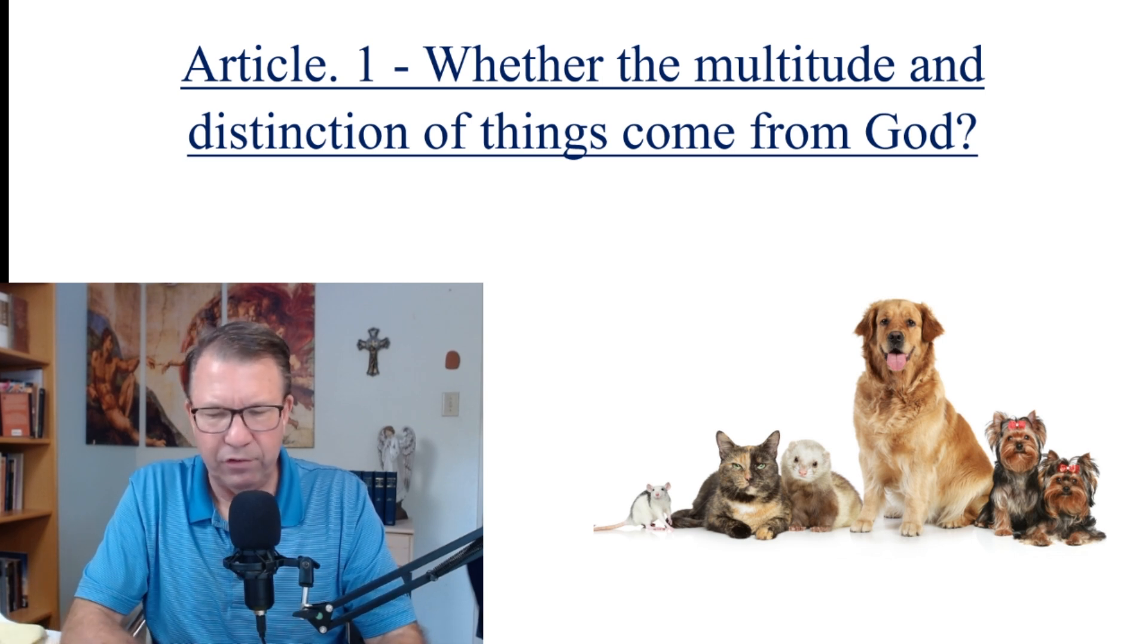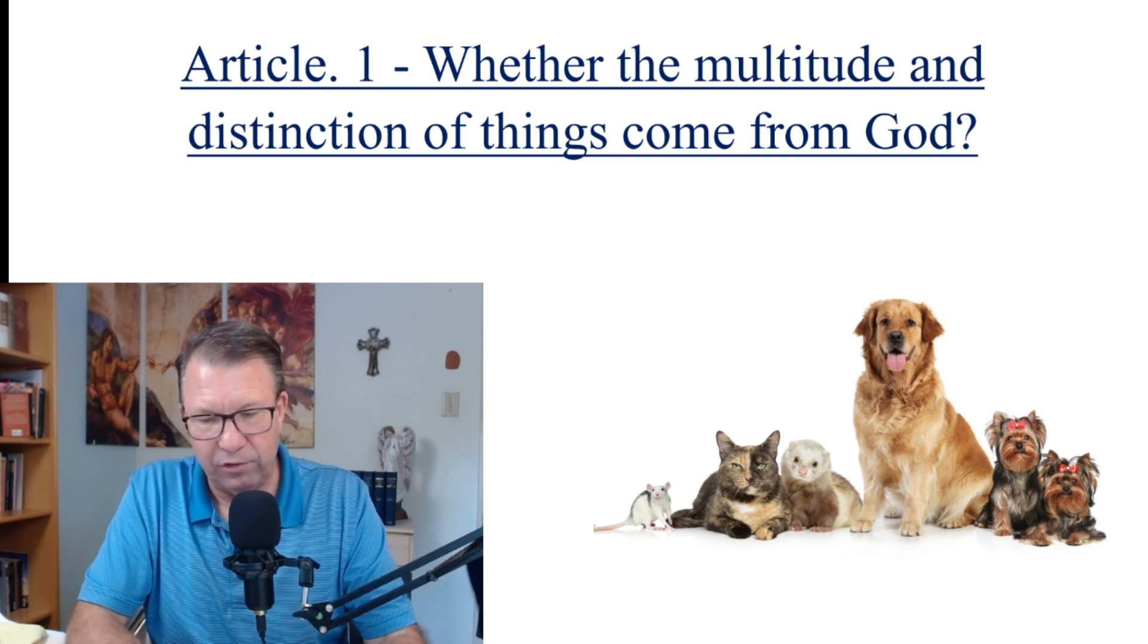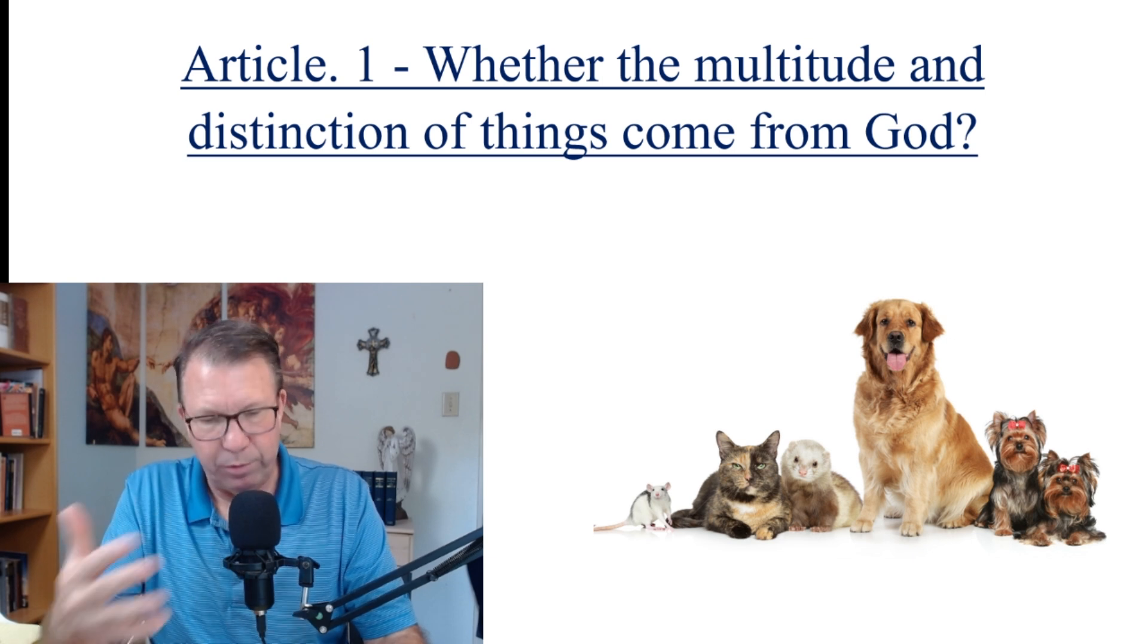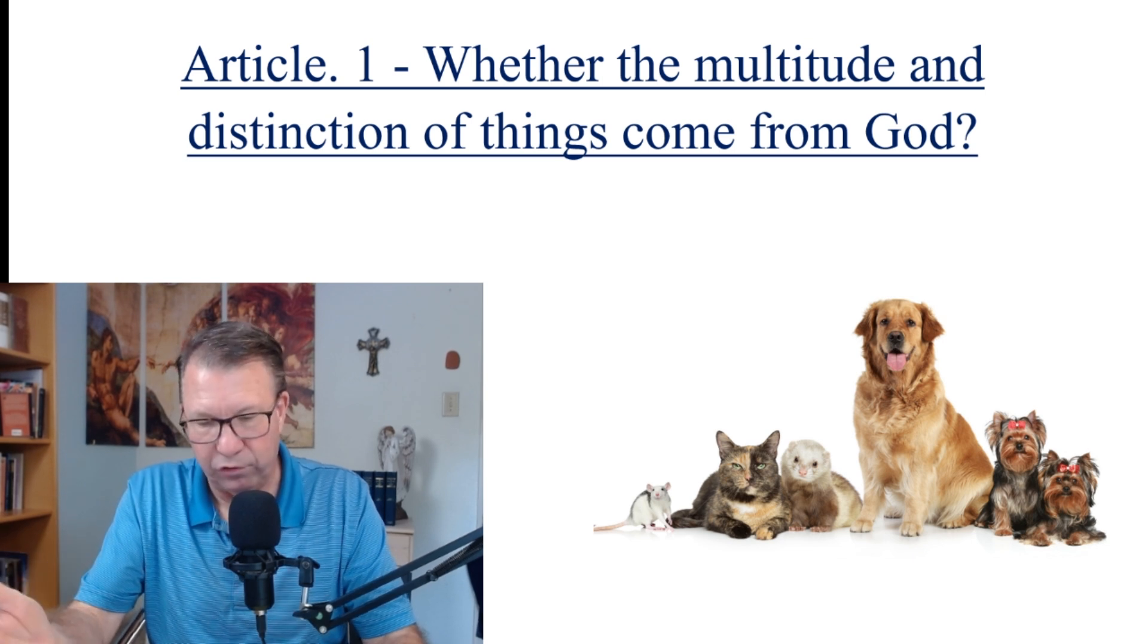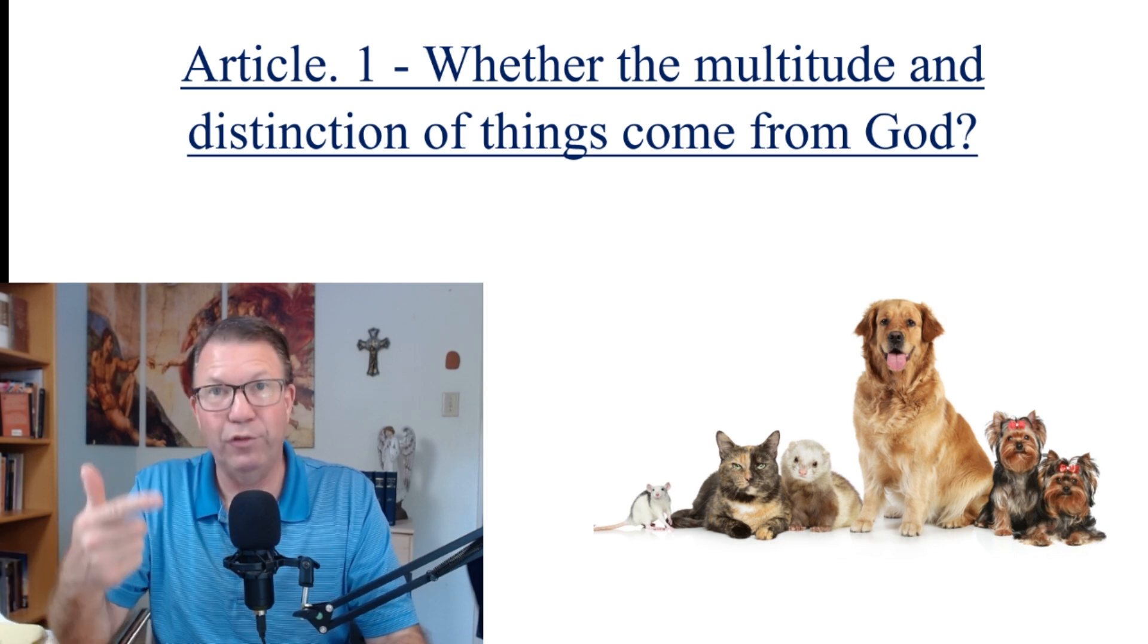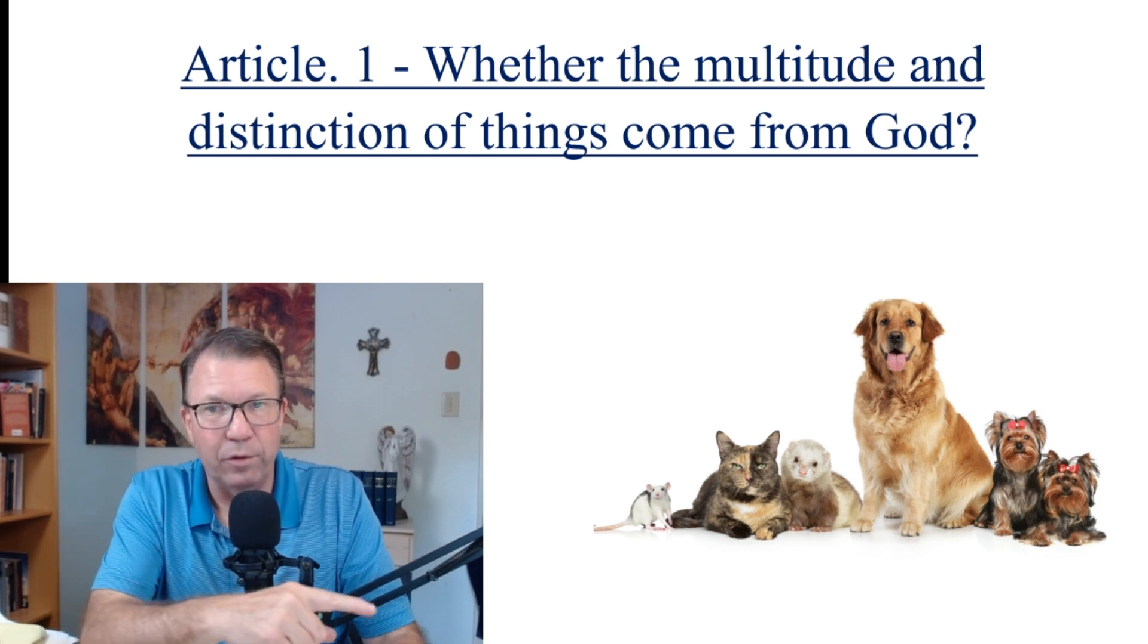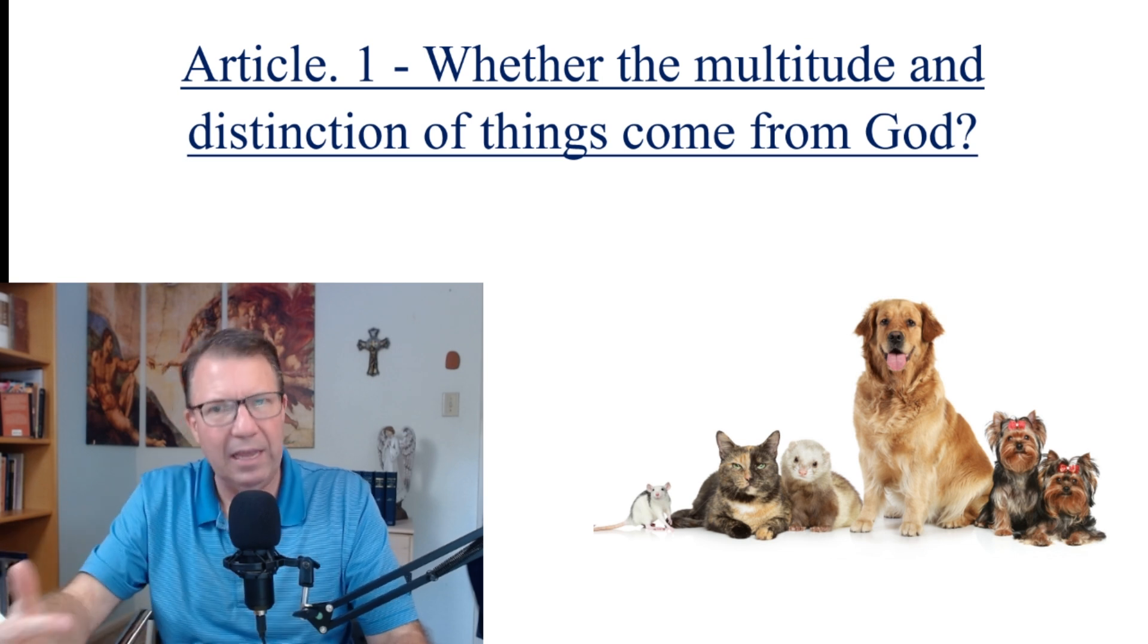Others have attributed the distinction of things to secondary agents, as did Avicenna, who we referred to a couple of days ago, who said that God, by understanding himself, produced the first intelligence, in which, for as much as it was not its own being, there is necessarily composition of potentiality and act. And so, the first intelligence, inasmuch as it understood the first cause, produced the second intelligence, and insofar as it understood itself as potentiality, it produced the heavenly body, which caused movement, and inasmuch as it understood itself as having actuality, it produced the soul of the heavens. So again, we talked about this a couple of days ago, that God created some things, and then those things created something else, and they created something else.